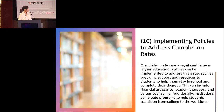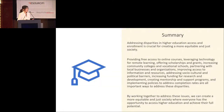The tenth solution: implementing policies to address completion rates. Completion rates are a significant issue in higher education. Policies can be implemented such as providing support and resources to help students stay in school and complete their degrees — including financial assistance, academic support, and career counseling. Additionally, institutions can create programs to help students transition from college to the workforce. These are 10 actionable solutions we can apply right now to address the challenges we face in the global educational system.